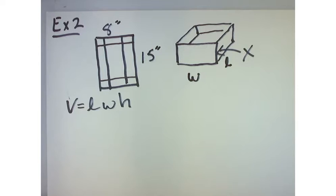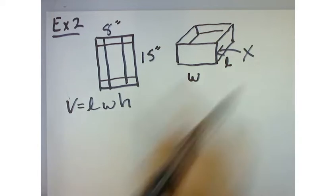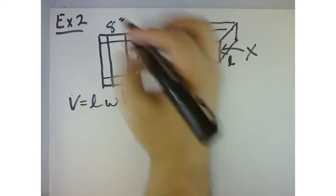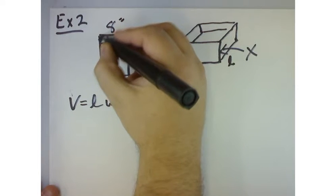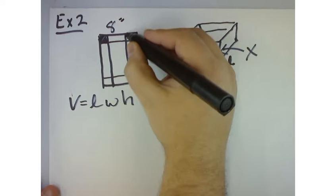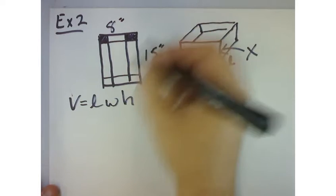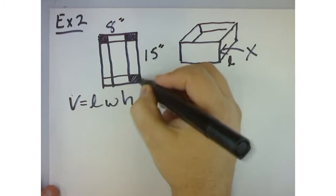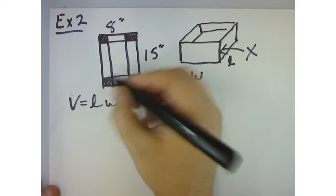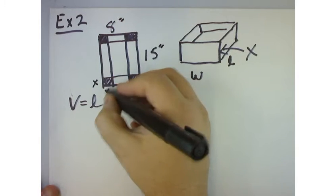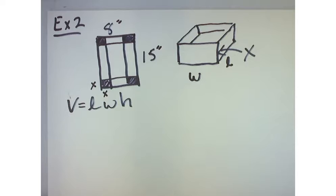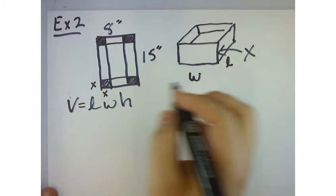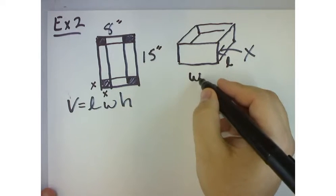Well, what is the length? Well, if I unfold this box, I'm going to have something like this, right? These little corners are what I'm planning on cutting out. Well, what are the size of those little corners? Well, they're x by x.